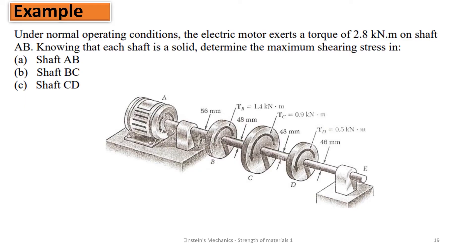We need to find the maximum shearing stress in shaft AB, shaft BC, and shaft CD. This is shaft A, this is shaft B, this is to C, and this is to D. We are to determine the shear stress inside the shaft where we are having a torque produced from the motor, equal to 2.8 kilonewton-meters.